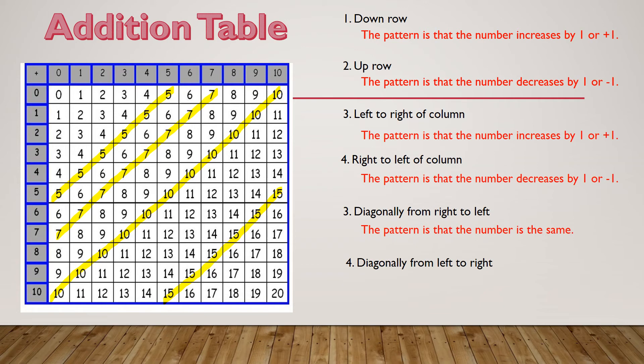And one more, diagonally from left to right. So an example would be this line. What pattern do you see in these lines? So I'm going from 2, 4, 6, 8, 10, 12, 14, 16, 18. And this reminds me when I started talking about patterns, it was increasing by 2.